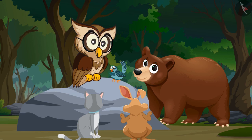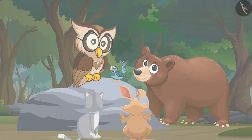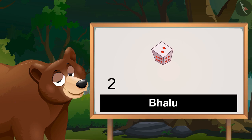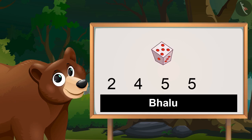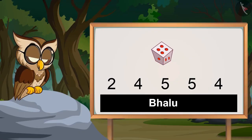Now Bhalo, it's your turn. Okay — two, four, five, five, five, four. So Bhalo got these numbers on the dice. Now Chichi and Saloni, turn-wise roll the dice and see what numbers you get.